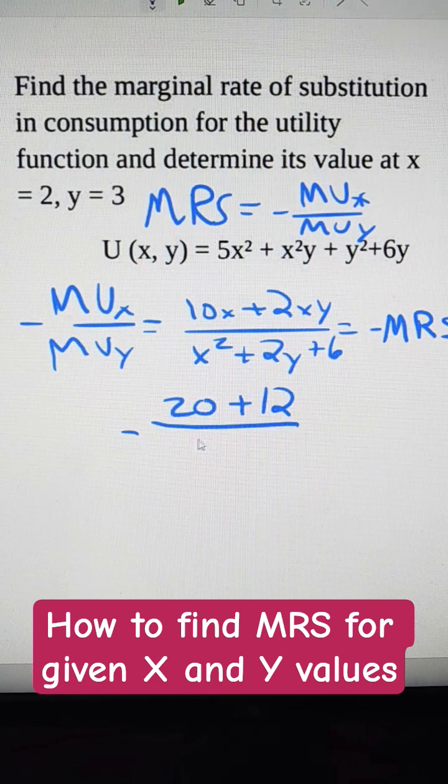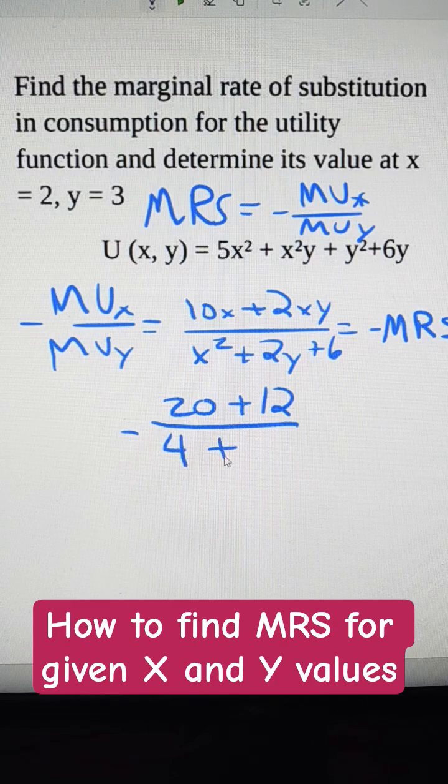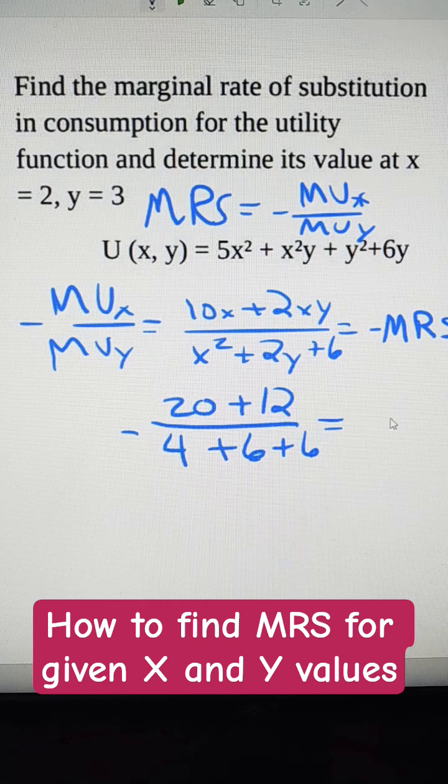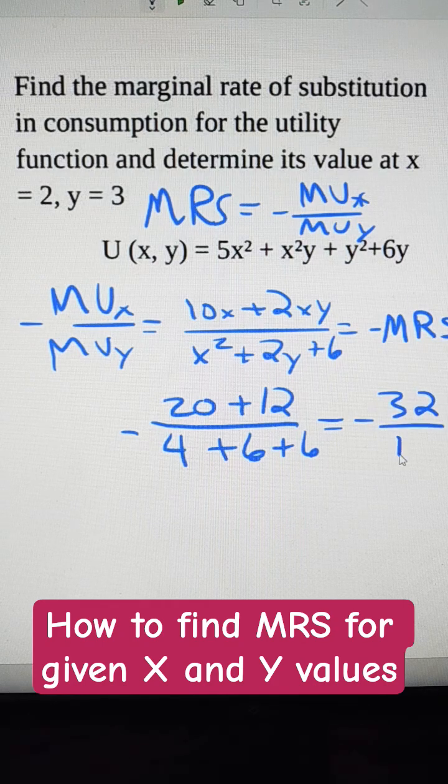And then over 4 plus 6 plus 6. So this becomes negative 32 over 16.